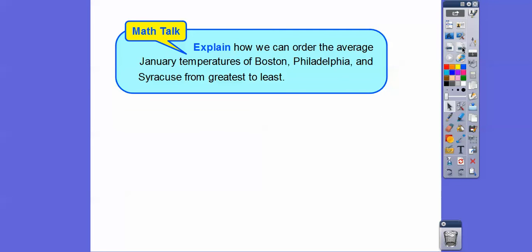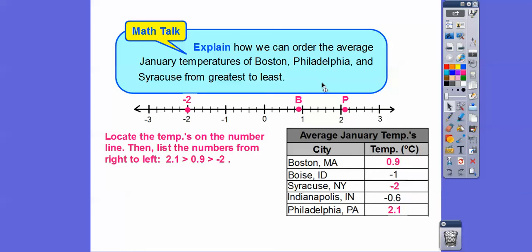So explain how we can order the average temperatures for Boston, Philadelphia, and Syracuse from greatest to least. We'll do from greatest to least this time. So what we do is locate the temperatures of these three cities on the number line.